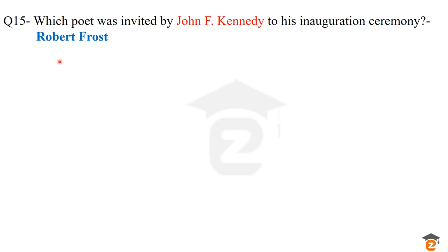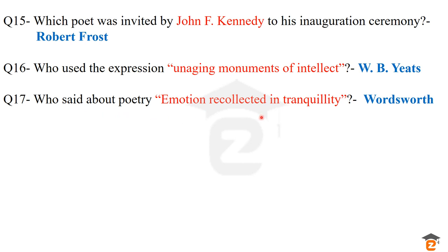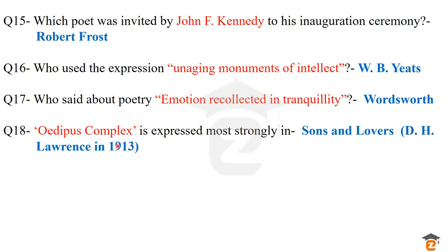Question number 16: who used the expression 'the unaging monuments of intellect'? The answer is W.B. Yeats, who used this expression in his poem Sailing to Byzantium. Question number 17: who said about poetry — 'emotion recollected in tranquility'? The answer is Wordsworth. William Wordsworth was the Romantic poet who gave this very famous view on poetry through this line.